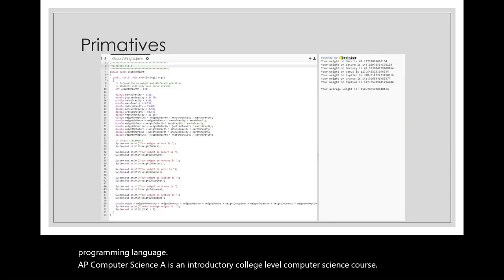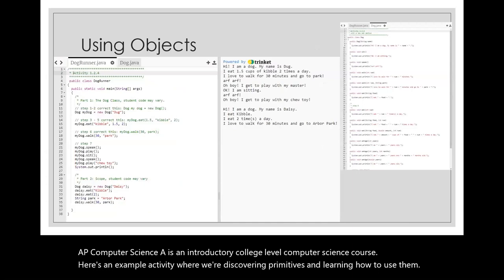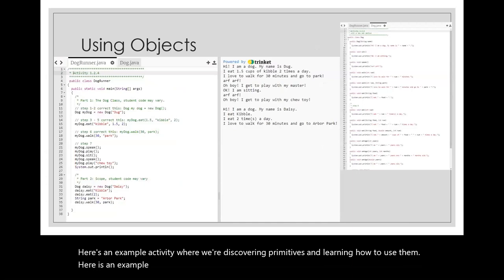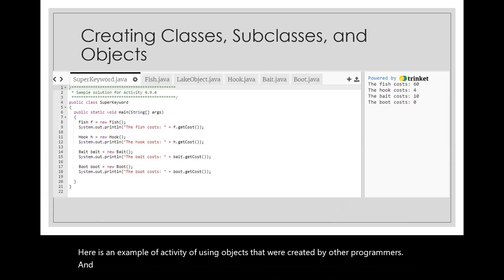Here's an example activity where we're discovering primitives and learning how to use them. Here's an example of using objects that were created by other programmers. And here is an example of creating classes, subclasses, and objects.